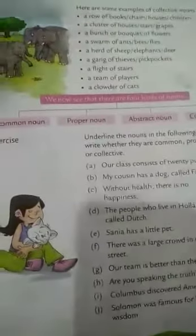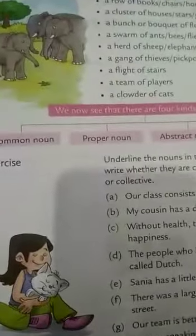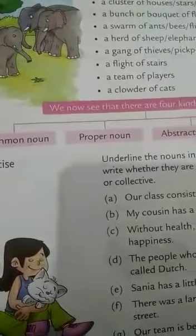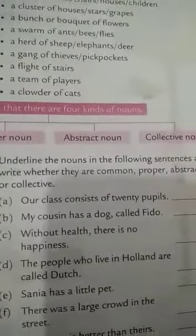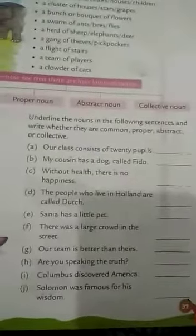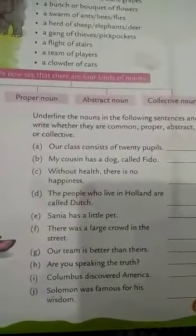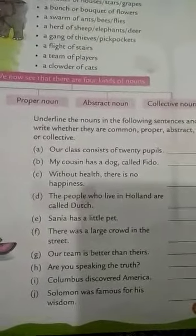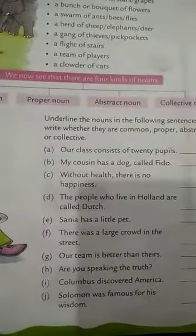We now see that there are four kinds of nouns: common noun and proper noun, which we already learned before, and now abstract and collective noun. Here are some exercises that can help you understand this topic clearly. By doing them you will understand abstract and collective noun clearly. Thank you.